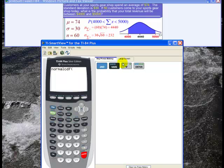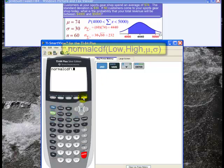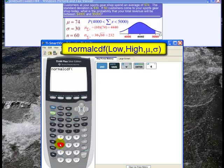The low number is 4000—that's the left part of the area. The high number is 5000—that's the right-hand side of the area.